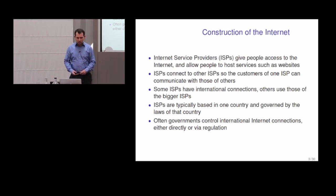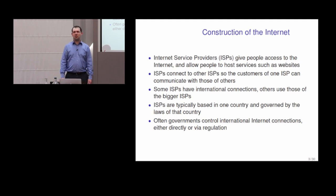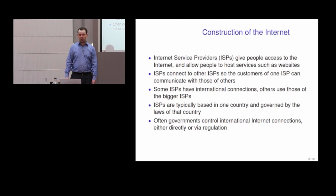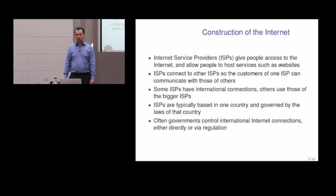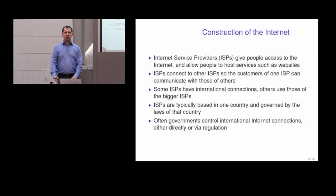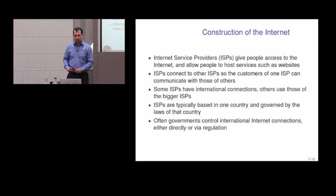The reason that people can do censorship, and also implement surveillance, is a consequence of the construction of the internet. Privacy wasn't really designed into the internet when it was made — it was enough of an achievement to allow computers with different architectures to communicate in the first place. So the internet has been optimized in its initial design for connectivity and in its current design for reducing cost. In practice, you don't get access directly to the internet — you have access to an internet service provider.